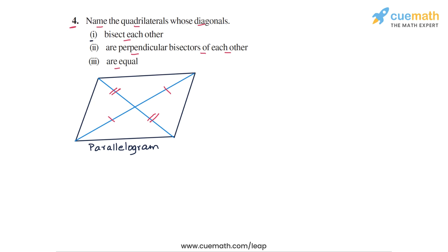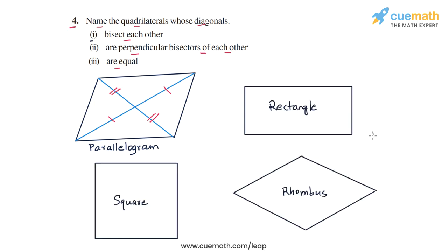Specific kinds of parallelograms will also be quadrilaterals in which the diagonals bisect each other. For example, rectangles, squares, or rhombuses — these will all be quadrilaterals in which the diagonals bisect each other. So the answer to the first part is: parallelograms, rectangles, squares, and rhombuses.